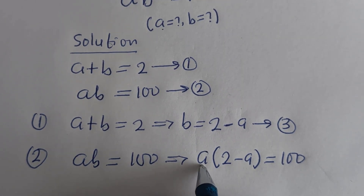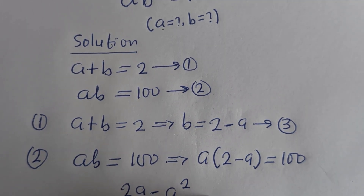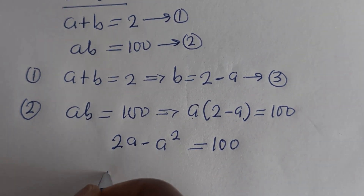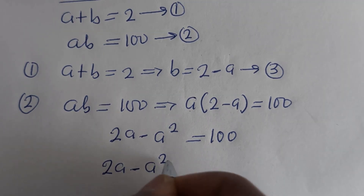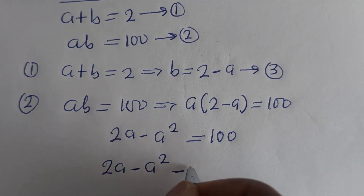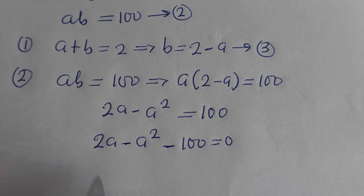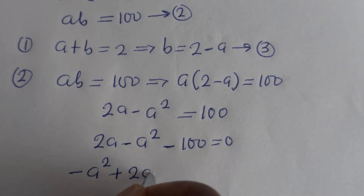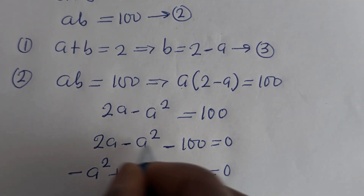Let us open this bracket. A multiplied by 2 gives 2A, minus A multiplied by A gives A squared, so 2A minus A squared is equal to 100. Rearranging, 2A minus A squared minus 100 is equal to 0.